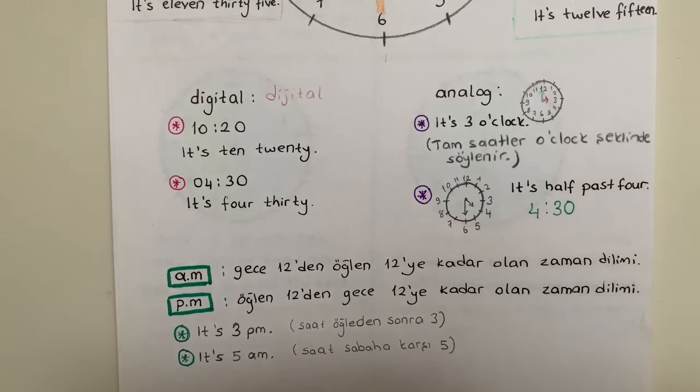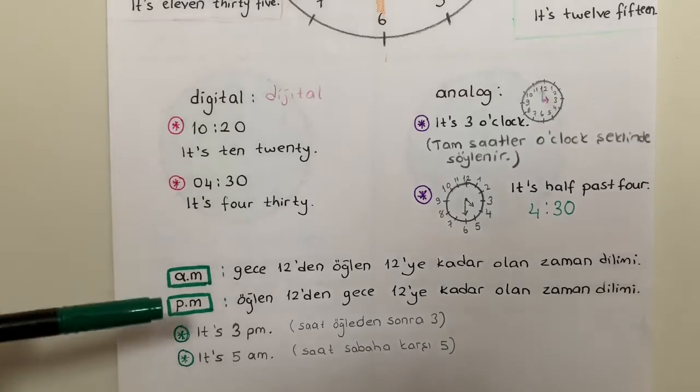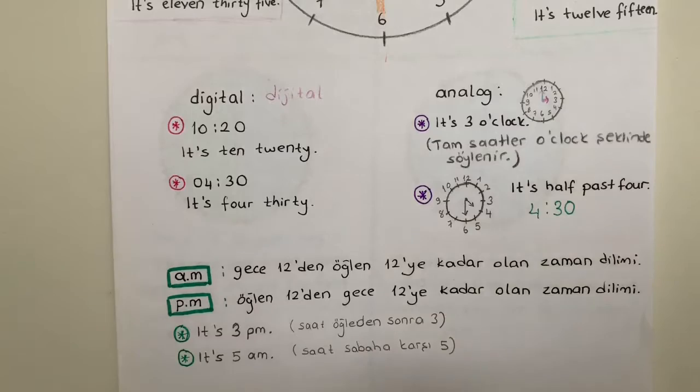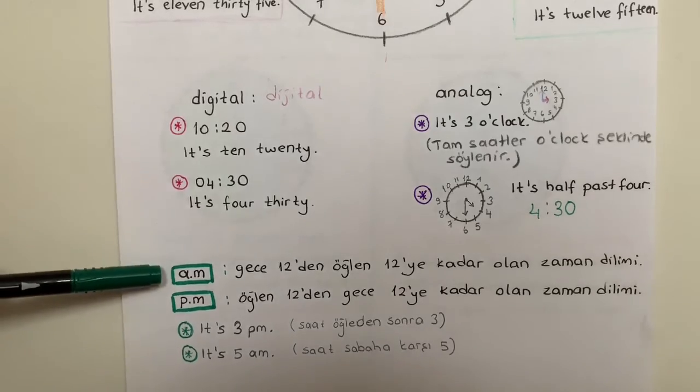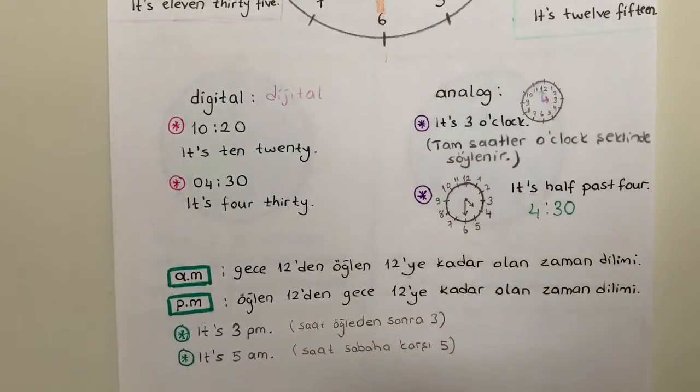We mentioned this in the classroom before, and now I'm repeating again. If I use a time between noon to midnight, I use PM. If I use a time between midnight to noon, I use AM. In Turkish again, şimdi